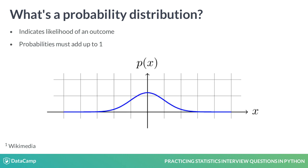Here we see an example of a continuous probability distribution, where the total area under the curve adds up to 1.